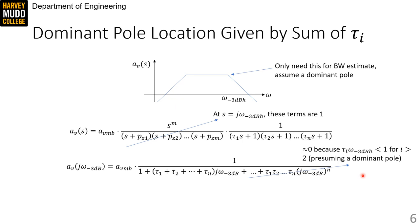The expanded denominator lets us realize that all these high order s terms are going to be pretty close to zero. That's because τi times ω-3dBH is, or τ1 times ω-3dBH is one by definition at the dominant pole, and every other τi is smaller than τ1. So multiplying those terms by ω-3dBH is going to result in very small numbers.